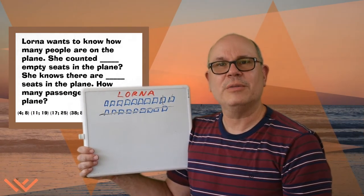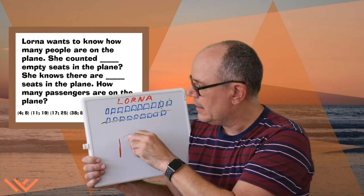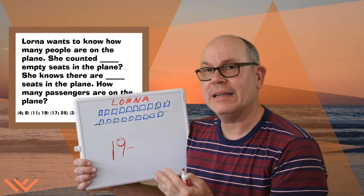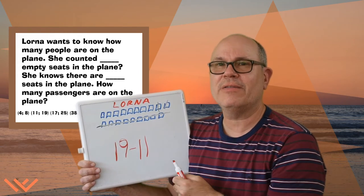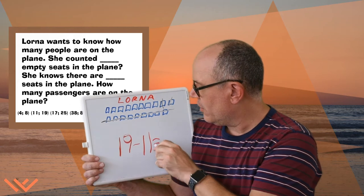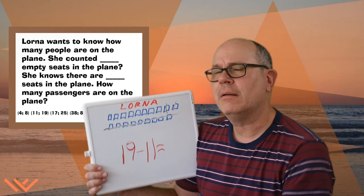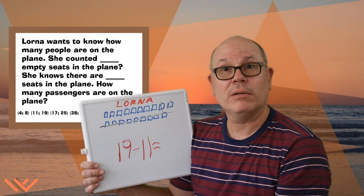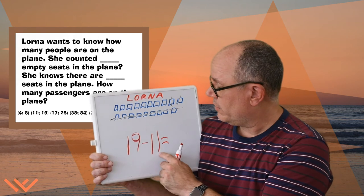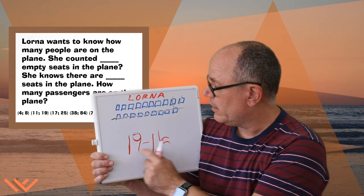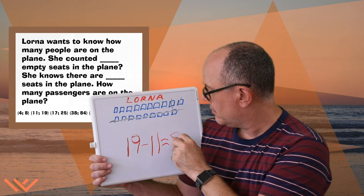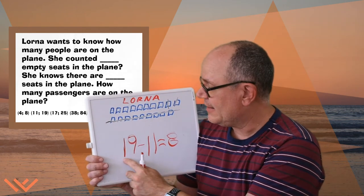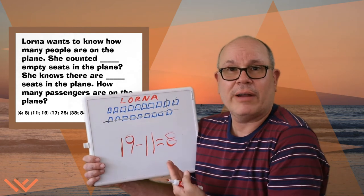Now let's take a look at the standard algorithm to figure this out. We know there are 19 seats total, so we do 19 minus — because we're subtracting — 11, and those 11 are empty seats. We're trying to find the seats that are full. So 19 minus 11: we have 1 one and 9 ones. 9 ones minus 1 one is equal to 8. Then we have a 10 and a 10 — take those away. So we already have our answer: it's 8.